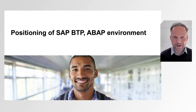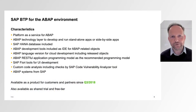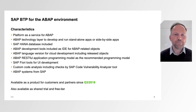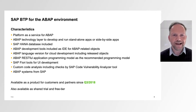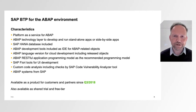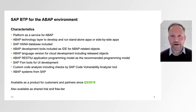In order to understand the positioning of Steampunk, let me explain the main characteristics. Steampunk is the platform-as-a-service offering for ABAP. The ABAP technology layer is intended to develop and run standalone apps and side-by-side apps. It comes with an HANA database automatically included. The ABAP development tools are mandatory, the ABAP language version is cloud-optimized and enforces the usage of released objects.